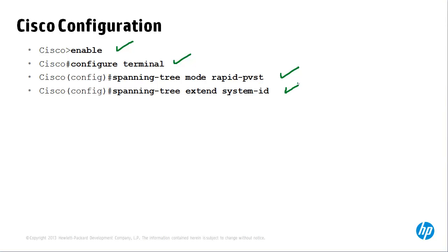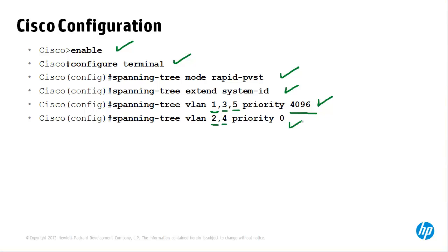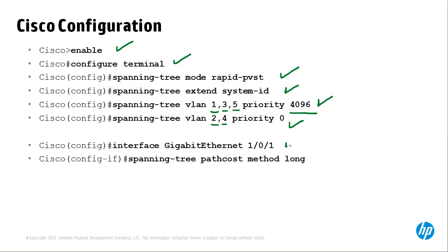On Cisco, use extended system IDs, where the priority field consists of the VLAN number and the priority. Configure your VLAN priorities — VLANs 1, 3, and 5 are configured with a priority of 4096 and VLANs 2 and 4 with a priority of 0. This is the opposite of the HP Comware switches, thus allowing for load sharing on uplinks. Also configure interfaces to use the long method for cost calculations — this command determines which cost should be configured on the HP switches.